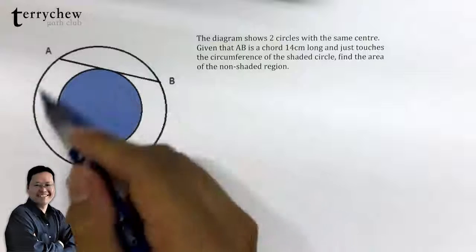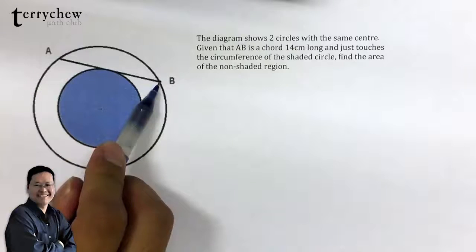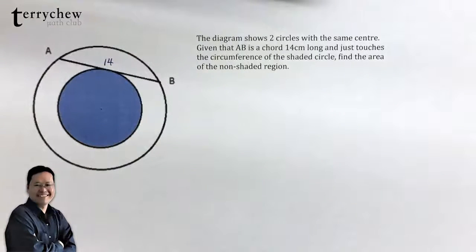In the figure shown we are given two concentric circles with the chord of the big circle tangent to the small circle and this chord has length 14. We are asked to find the area of the unshaded region.